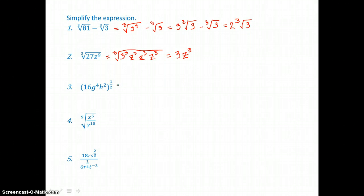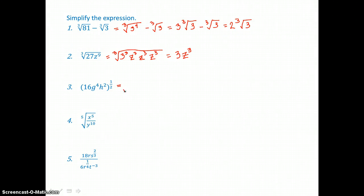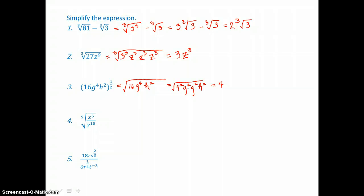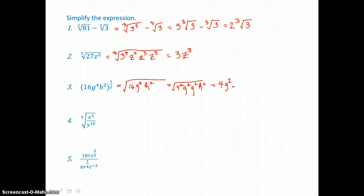Now I can simplify this product raised to the one-half power a number of ways. But if I take the square root of that product — 16g to the fourth power times h squared — I know for every 2 factors alike, 1 will come out. So I'll think of that 16 as 4 squared, g to the fourth as g squared times g squared, and I have h squared. So taking the square root of 2 factors of 4, 1 will come out. The square root of 2 factors of g, 1 will come out, but I'll do that twice, so I'll have g squared. And the square root of 2 factors of h will be h. So there's my simplified product.